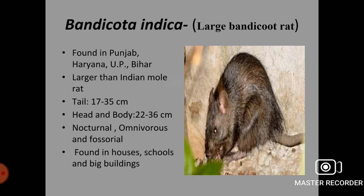Next species is Bandicota indica, the large bandicoot rat. It is found in states like Punjab, Haryana, UP and Bihar. The size of this rat is larger than the Indian mole rat. Head and body length is 22 to 36 cm, and tail length is 17 to 35 cm. This species is nocturnal and is an omnivorous and fossorial pest found in houses, schools and big buildings.